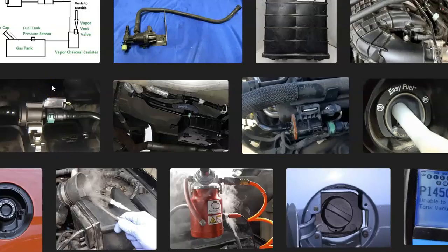That's basically it — a basic overview of how you go about fixing a Ford Mustang with the P1450 code. If you have anything to add, please comment below. If you have questions, ask and I'll try to answer them. If this video helps you, please click like, subscribe, and have a good day.